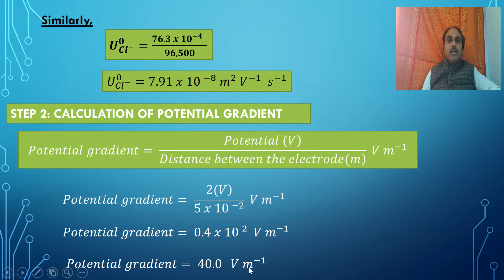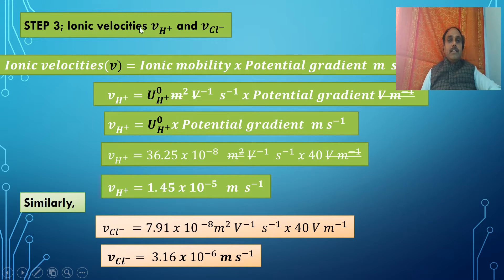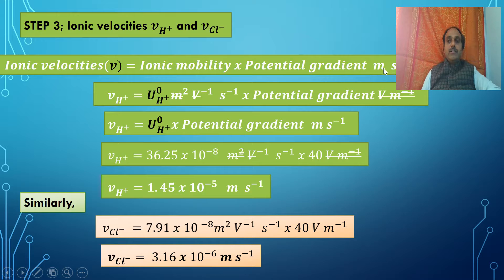From Step 1 we have ionic mobilities of H⁺ and Cl⁻, and the potential gradient for both ions is 40 volt per meter. Ionic velocities for H⁺ and Cl⁻ can now be calculated using: ionic velocity = ionic mobility × potential gradient. The unit is meter per second.